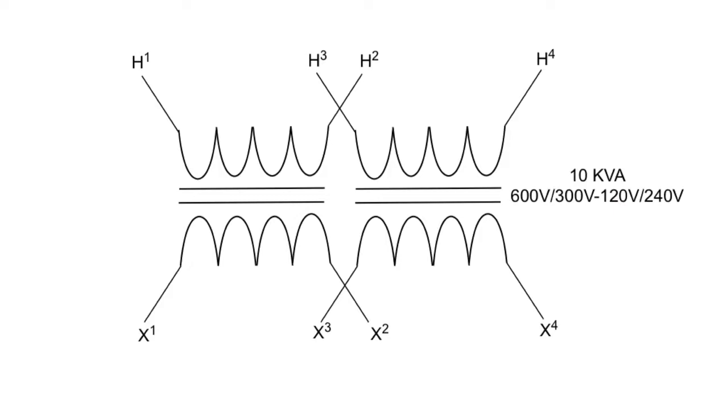Now, what we're going to do is determine each winding rating. Let's talk about the high side first. We look at the lower voltage, 300 volts. With these two voltages, 600 and 300, we're going to take the 300 volts, and that is our winding rating. Let's get that written in there.